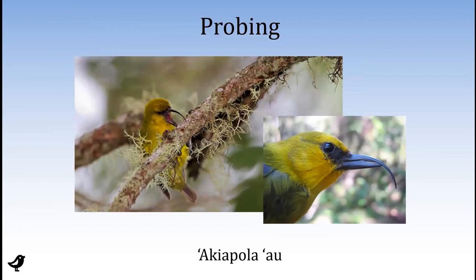There are a lot of birds on land that probe, and my favorite prober I've ever seen is this Akiapolaau from Hawaii. You can see the incredible beak that's so different from top to bottom — they forage with their mouths open. They go around poking and probing with that little sharp woodpecker-like lower bill, and if they find some insect that's a little too deep, they can hook it out with that upper bill. Really highly specialized and a spectacular prober, on the Big Island of Hawaii.